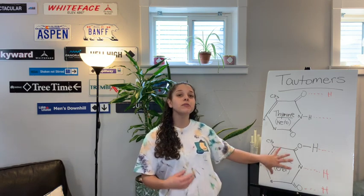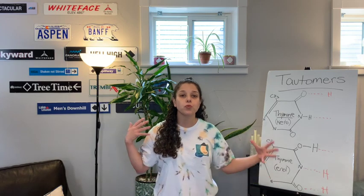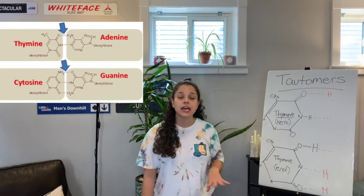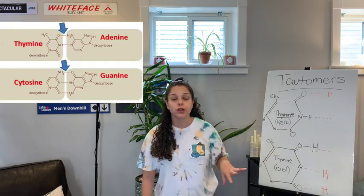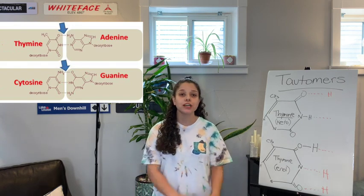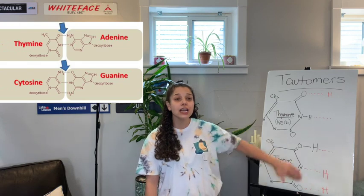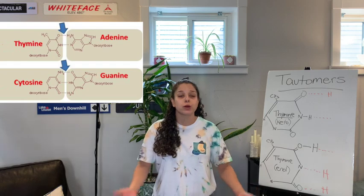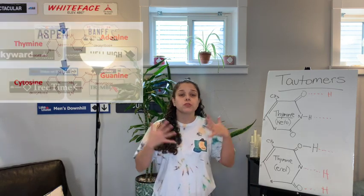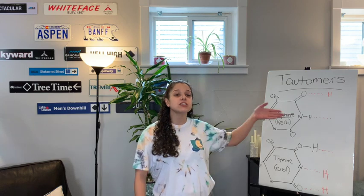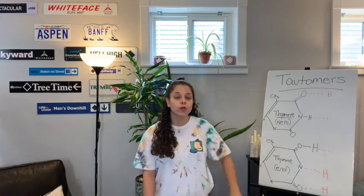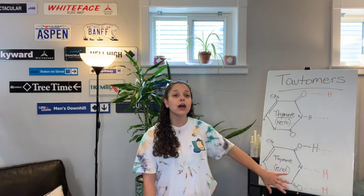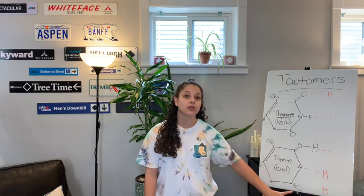In its enol form, the thymine is going to create three hydrogen bonds with the base on the opposite strand. So now, instead of pairing with adenine — which only wants two hydrogen bonds — it's going to preferentially bind with guanine, because guanine also wants to form three hydrogen bonds.